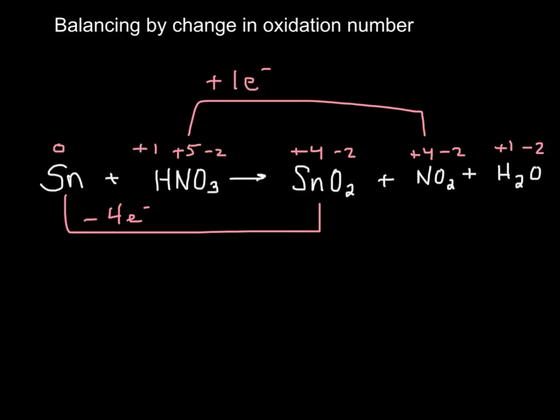Now I can't have something gain one electron and something lose four electrons. The electrons transferred have to be equal. They're the same electrons. So I'm going to make these electrons equal by multiplying by some number. I'm going to multiply the top by 4 and the bottom by 1.